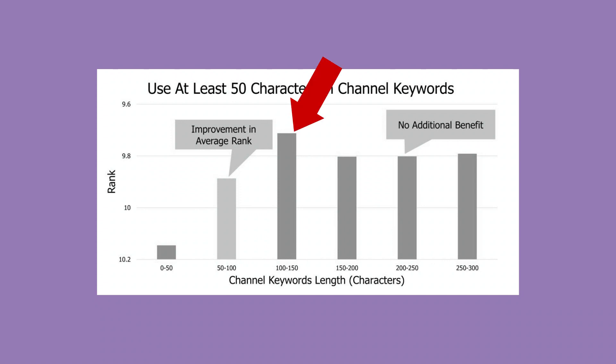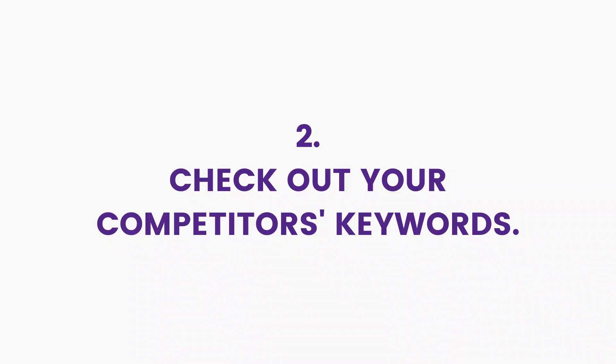The study I mentioned earlier showed that 100 to 150 characters are best for channel keywords, and once you get past 150 characters the benefits start to dwindle. Now let's move to the next step, which is to check out your competitors' channel keywords.